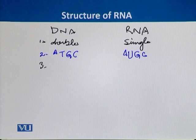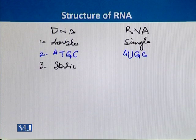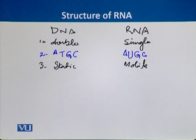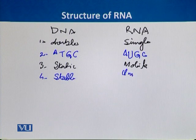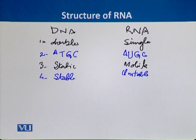The third difference is that DNA is a static molecule and is localized in the nucleus. On the other hand, RNA is a mobile molecule and moves from the nucleus to the cytoplasm. The fourth difference is that DNA is a very stable molecule, whereas RNA is very unstable. So it is very difficult to isolate RNA in an intact form, and special techniques are needed to make RNA stable.